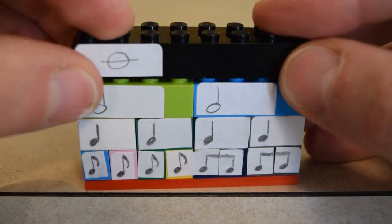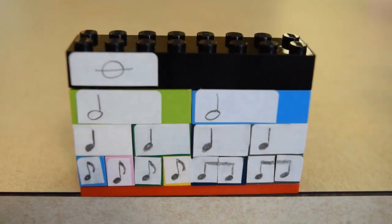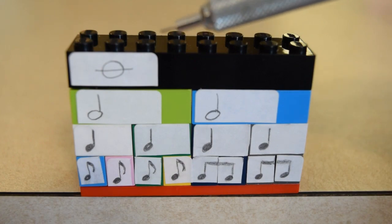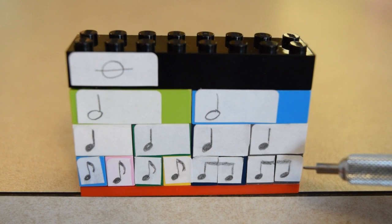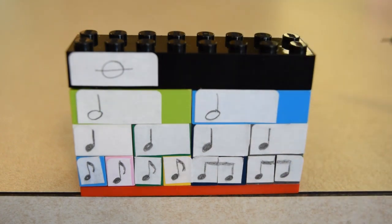If we plop our whole note on top of there, again, we've got our whole note, which would be equal to two half notes, four quarter notes, or eight eighth notes, or any combination of those.